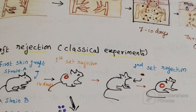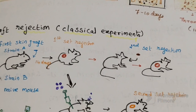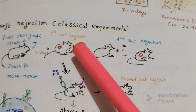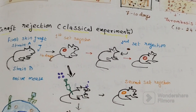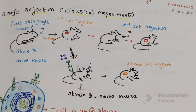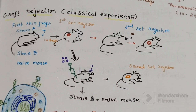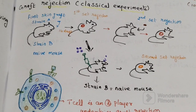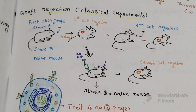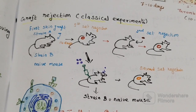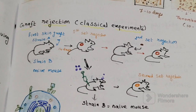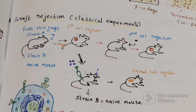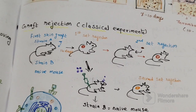If T cells are taken from the first set of rejection mice and injected into a naive strain mouse, the kinetics are very similar to a second set of rejection. So after putting primed T cells in a strain B mouse and then grafting the tissue, the kinetic becomes faster. This tells us that T cells or T helper cells might have a role in graft rejection.